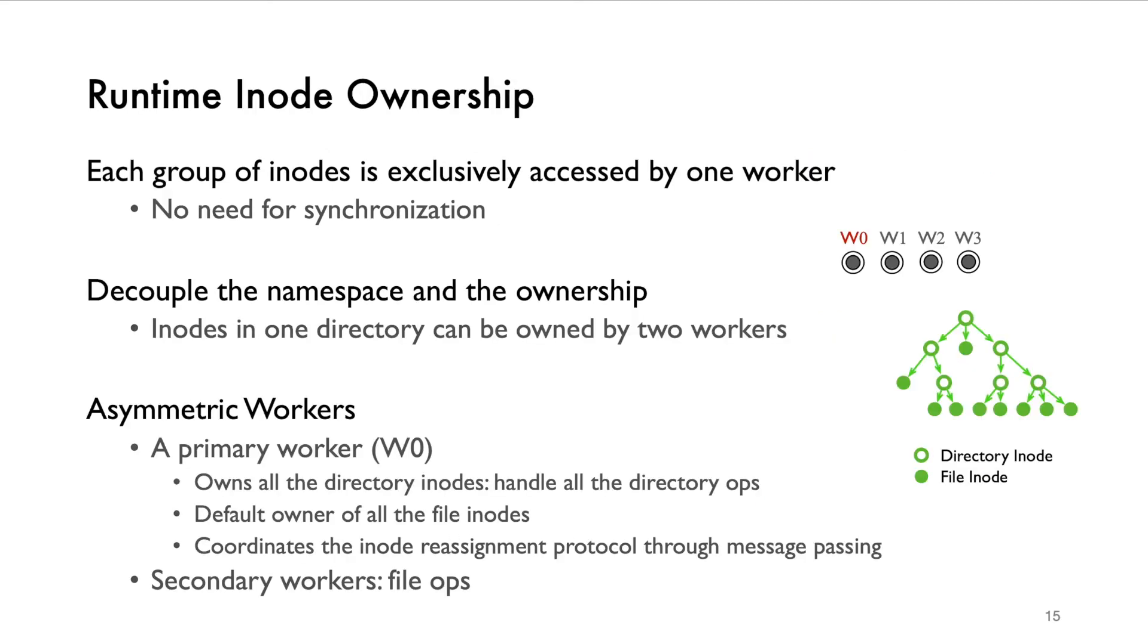The parallelism granularity we choose is the inode and we call it runtime inode ownership. When UFS is running, each core will be granted exclusive ownership of a group of inodes. The picture illustrates its ownership by a directory tree. At runtime, these three inodes are assigned to worker 1 and worker 2 holds the ownership of these four inodes. We decouple the namespace and the ownership such that the files in one directory can locate onto different cores. For instance, in the picture, worker 2 and worker 3 both own inodes from one directory.